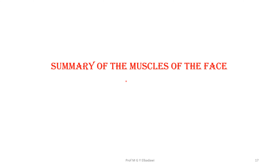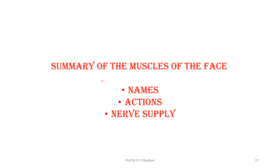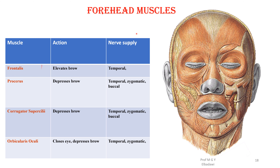Here is a quick summary of the muscles of the face — their names, actions, and nerve supply, all from the facial nerve. The forehead muscles include the frontalis muscle (the frontal belly), which elevates the brow, supplied by the temporal branch of the facial nerve. The procerus muscle depresses the brow. The corrugator supercilii also depresses the brow. The orbicularis oculi we have already described in detail.